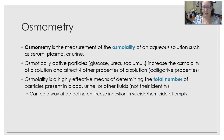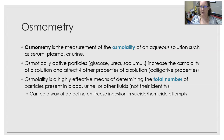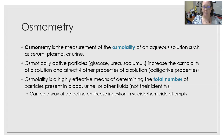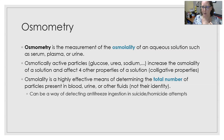This can be a way of detecting antifreeze ingestion in suicide or homicide attempts, because you will have an increase in number of particles present, but the glucose, urea, or sodium levels will be normal. The average clinical lab doesn't have a specific test for antifreeze, so if a patient presents to the ER with possible antifreeze ingestion, this would be a quick way to assess if there is a disconnect between the calculated osmolality — which can be calculated using the glucose, urea, and sodium values — versus the measured osmolality. Nephrologists also use serum and urine osmolality measurements to assess how well the kidneys are concentrating urine.